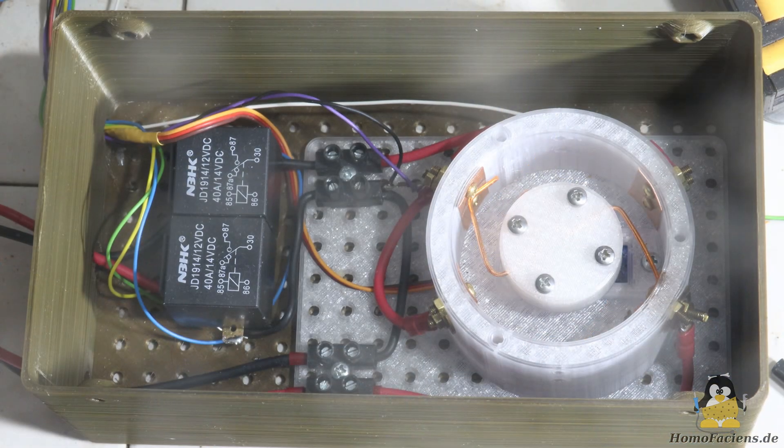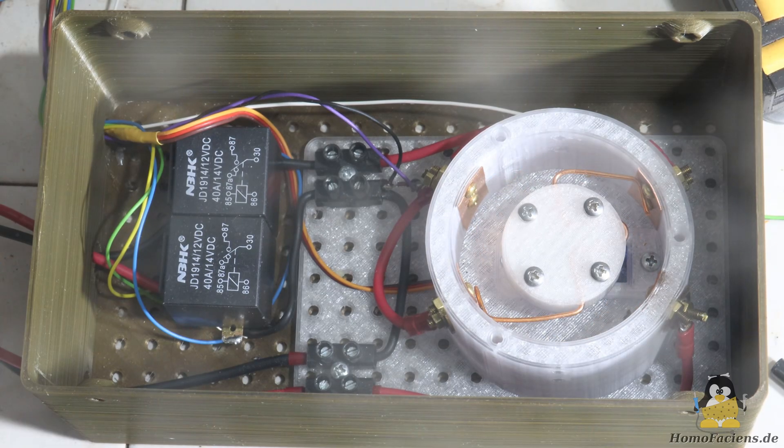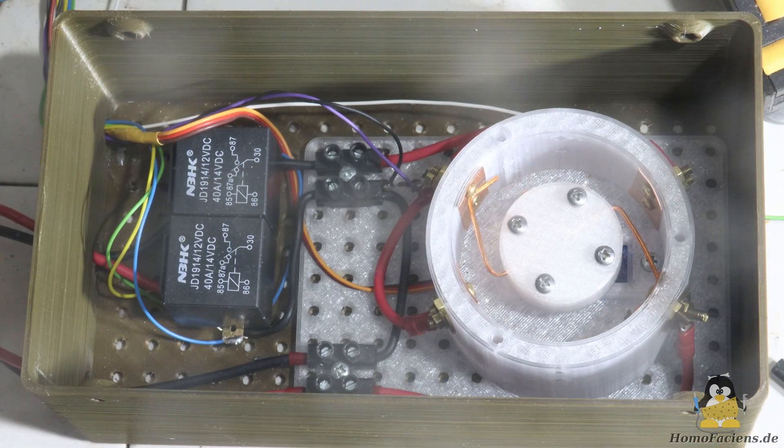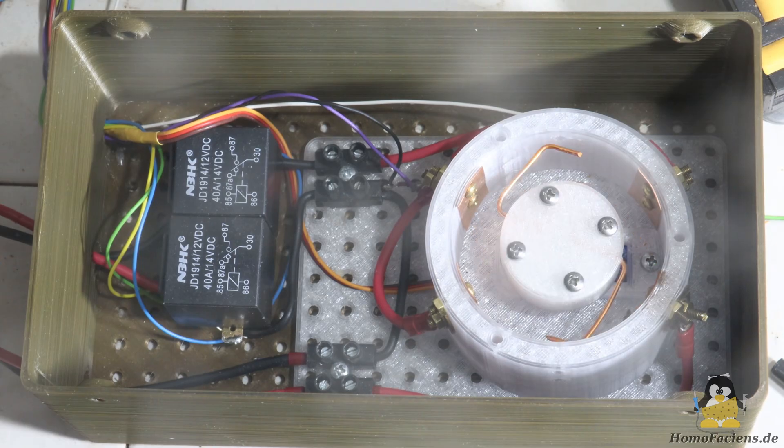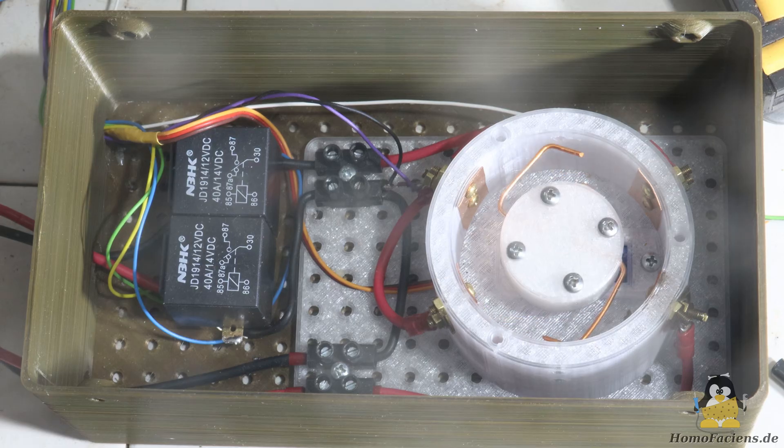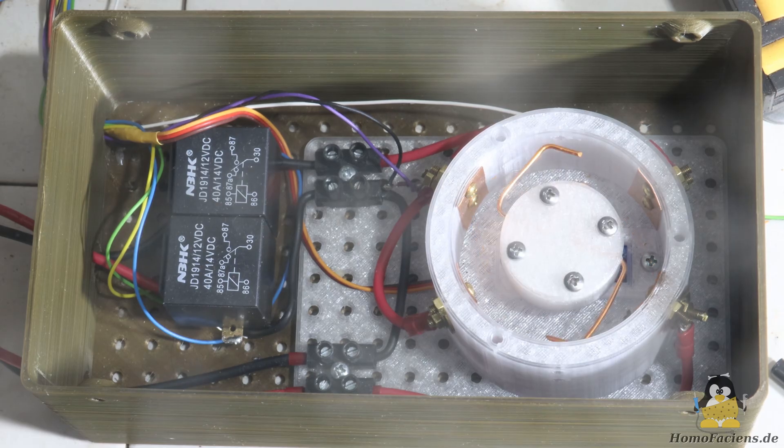The second video about my CNC spark erosion machine introduces one fundamental improvement and some other details I've implemented. The minor improvements include a microserver operated switch that allows the electrode to be used either for spark erosion or for measuring. The polarity between the workpiece and the electrode can be changed using two 12V 40A relays.